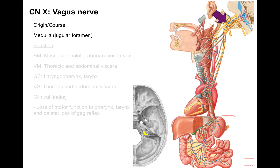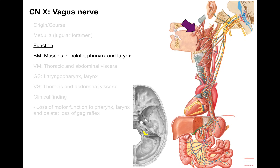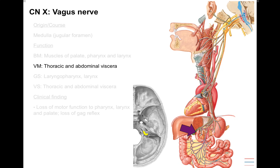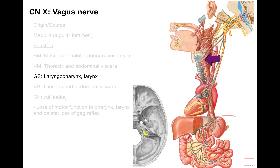It's called the wanderer — vagus for vagabond — because it has wide-ranging functions. It innervates muscles associated with the palate, pharynx, and larynx: the pharynx for swallowing and the larynx for speech, two very relevant features. It also does visceral motor to the thoracic and abdominal viscera — slowing the heart, constricting airways, and for foregut and midgut it supports digestion, glands, and peristalsis. It also provides general sensation from the laryngopharynx and larynx; anything touching the top of the larynx initiates a cough reflex to prevent food or fluids from going down the wrong airway.